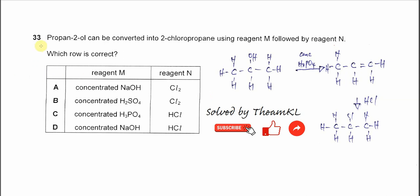Question 33. Propane-2-ol can be converted into 2-chloropropane using reagent M followed by reagent N. Which row is correct?